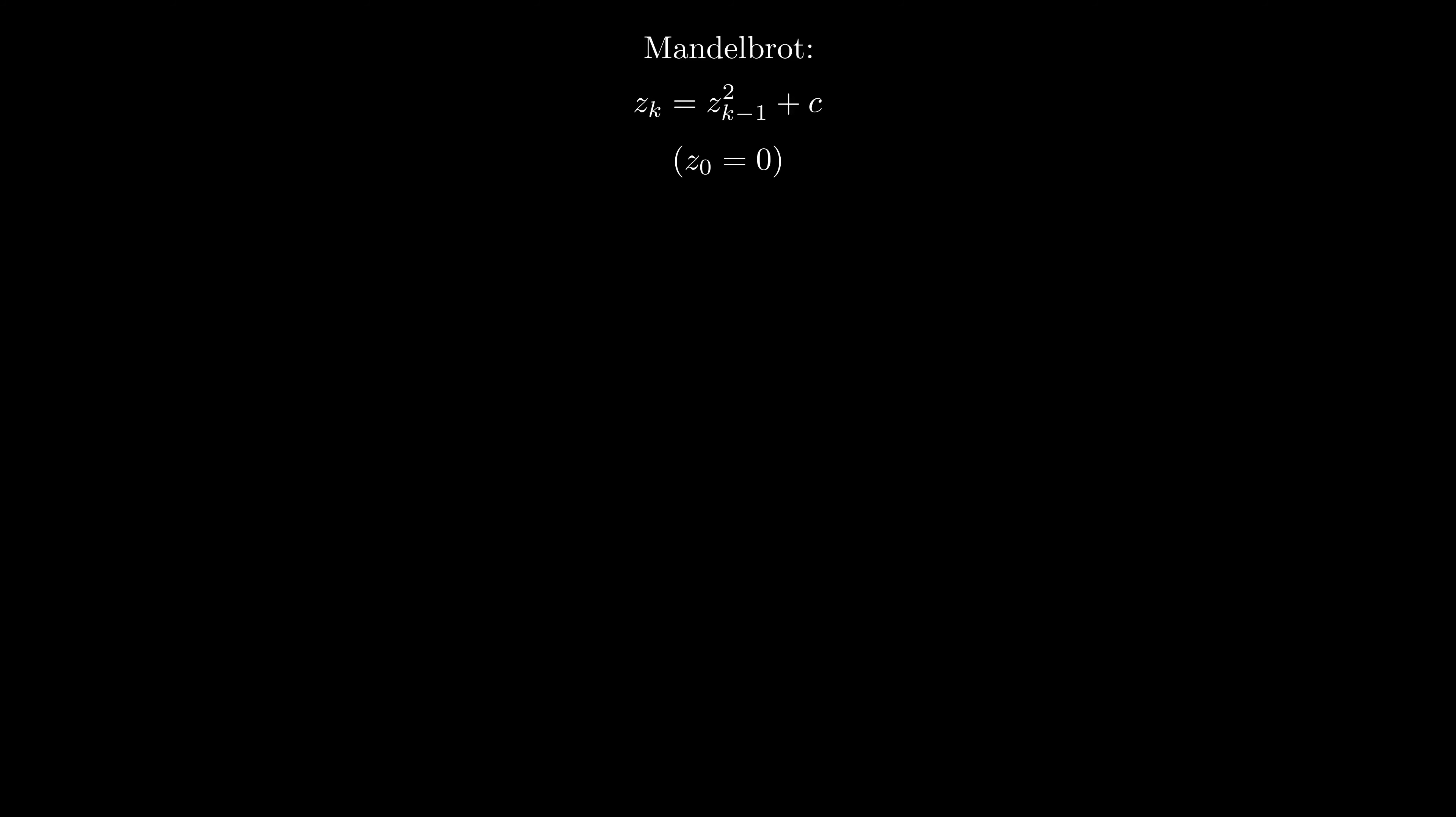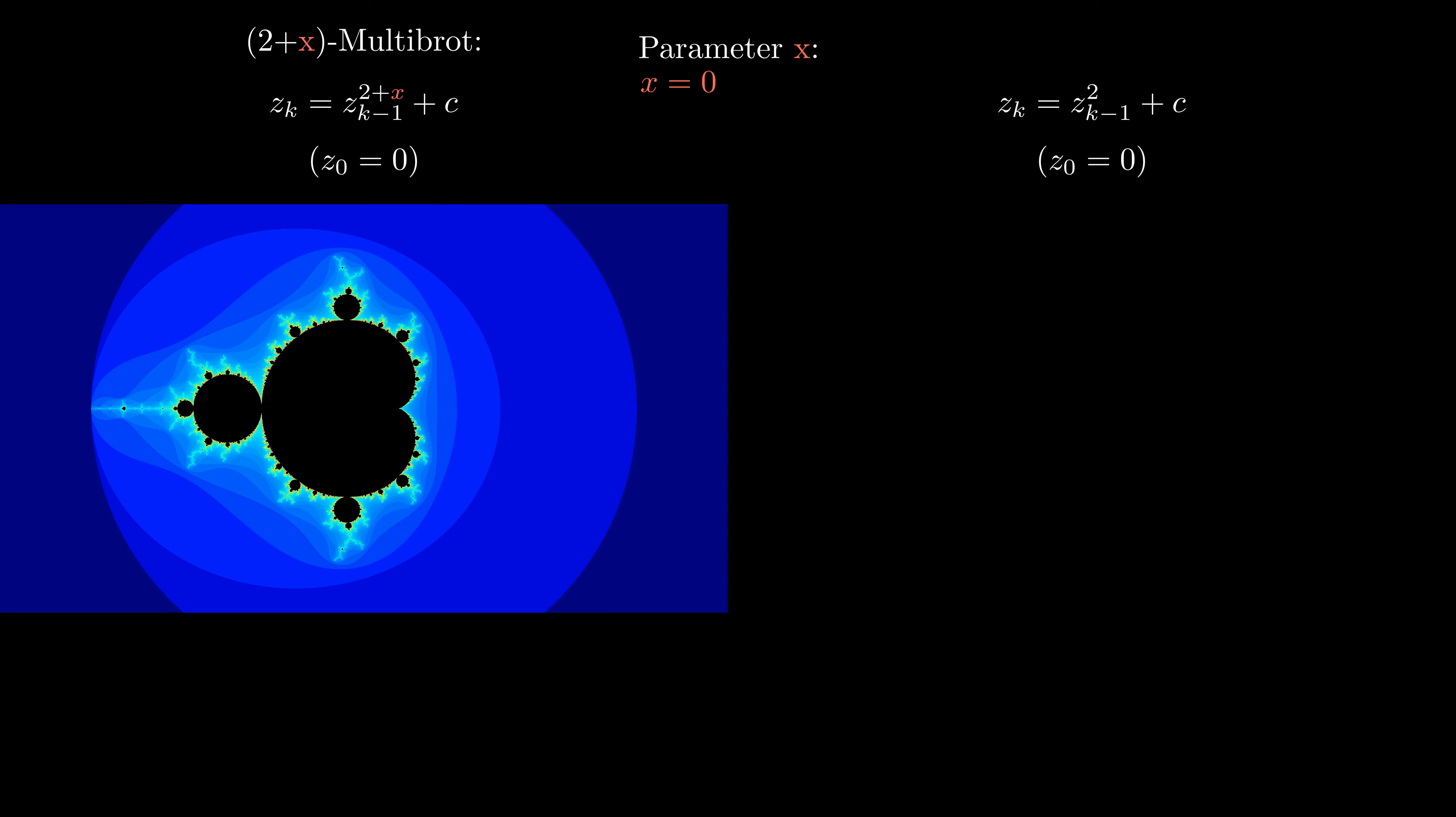So let's split the screen into a left side and a right side, and let's introduce the parameter X. On the left side, we modify the equation as in the multibrot video, and on the right side, we modify the equation as in the inversion video.